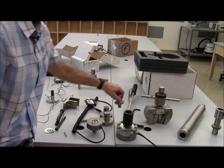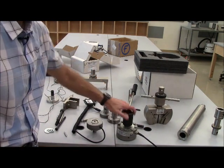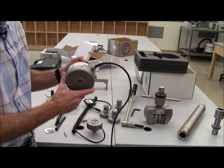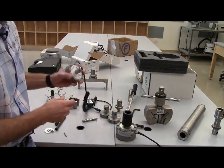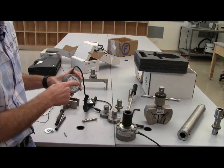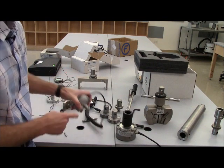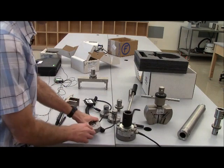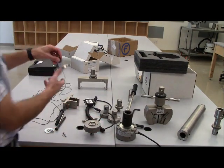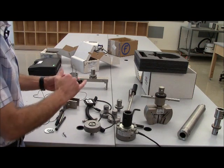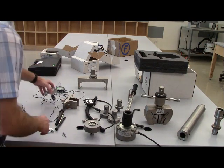As far as load cells go, we have three different capacities. We've already talked about the 50,000 newton. We also have a 2,000 newton. By the way, the 2,000 newton and below have the type OM. And then we also have a 100 newton load cell, the small one here, and of course an OM connection on that.